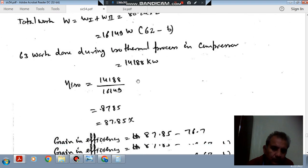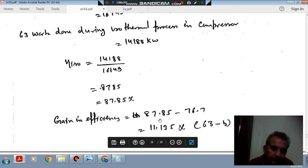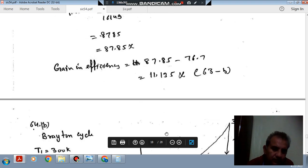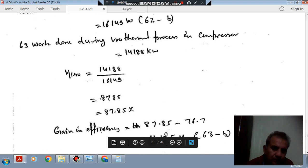The gain in efficiency will be 87.85 minus 76.7, which is 11.135%. So the answer to question 63 is option B.